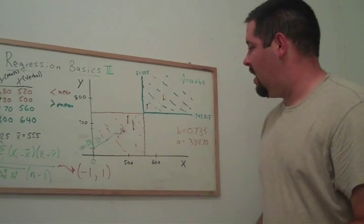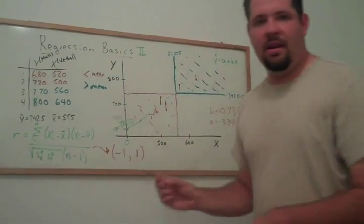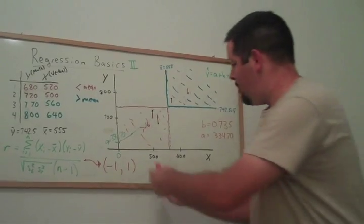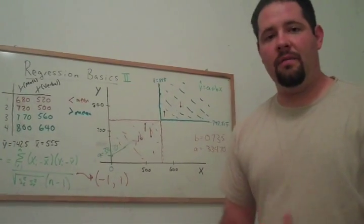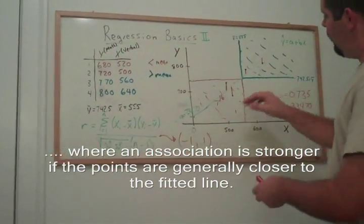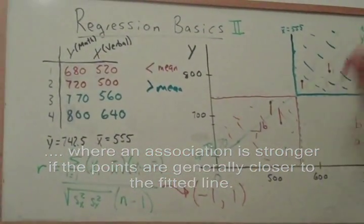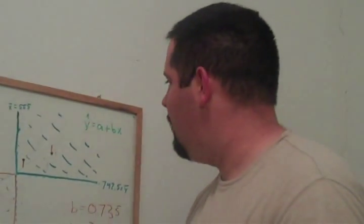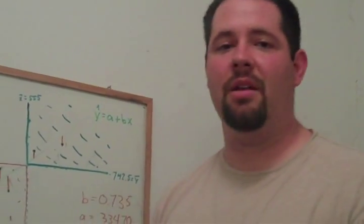And so that tells you that this not only measures the direction of the relationship, but it measures the strength of the linear association between x and y. If we have points that are really close to this line, we're going to end up with an r much greater in magnitude.